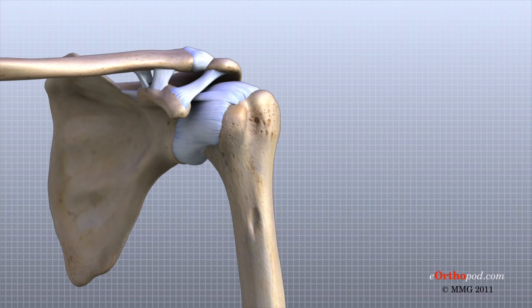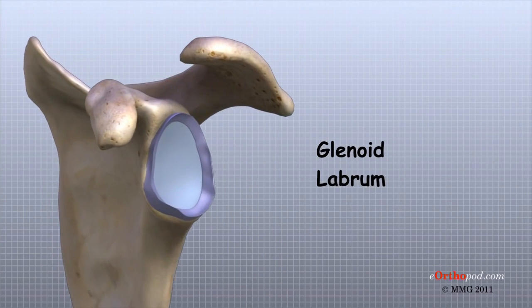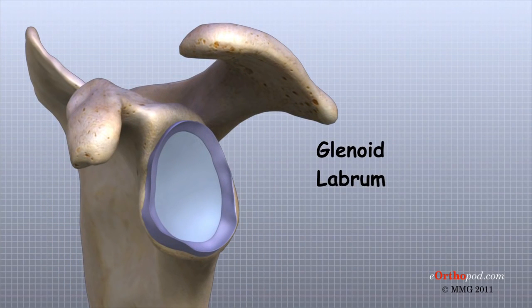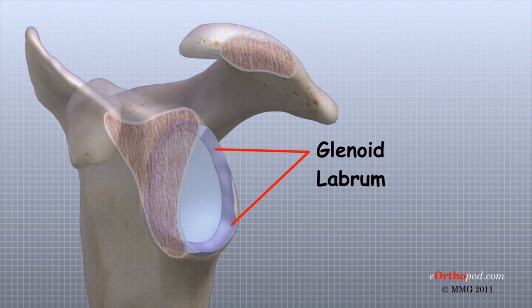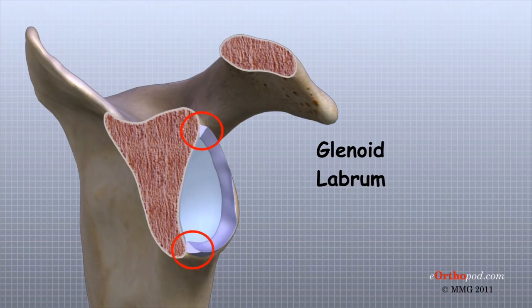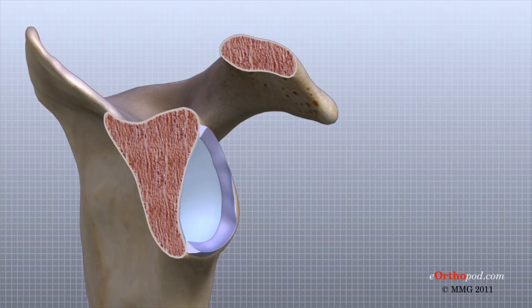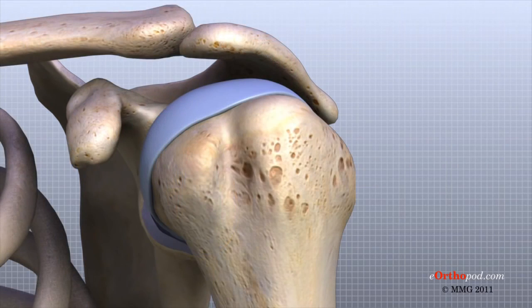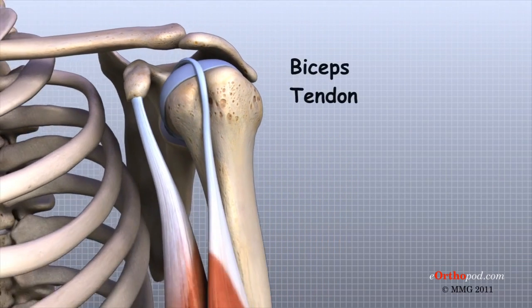A special type of ligament forms a unique structure inside the shoulder called the labrum. The labrum is attached almost completely around the edge of the glenoid. When viewed in cross-section, the labrum is wedge-shaped. The wedge shape and the way the labrum is attached create an elevated rim around the glenoid socket. This is important because the glenoid socket is so flat and shallow that the ball of the humerus does not fit tightly. The labrum creates a deeper cup for the ball of the humerus to fit into. The labrum is also where the biceps tendon attaches to the glenoid.